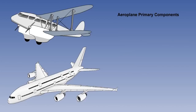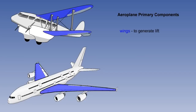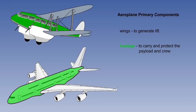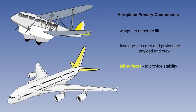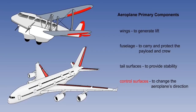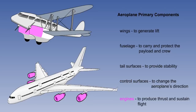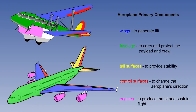To meet these basic requirements, all powered aeroplanes have the same primary components. These components are: the wings, which generate lift, enabling the aeroplane to fly and remain in the air; the fuselage, which safely carries the payload and crew; tail surfaces, which are designed to give the aeroplane stability, ensuring that the aeroplane naturally flies in a constant direction; control surfaces, to change the direction of the aeroplane's flight and, when required, its position in the air; and engines, to produce thrust, propelling the aeroplane forwards for the required duration of the flight. The five primary requirements of an aeroplane are therefore met by these five primary components: the wings, fuselage, tail surfaces, control surfaces and engines.